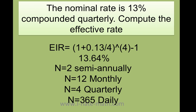Let's do another exercise. Let's say the nominal rate is 13%, but now it's compounded quarterly. You do the same formula, but now n equals 4. First, do 0.13 divided by 4, then add the 1, then do everything elevated to the 4 minus 1, and you will get the answer.